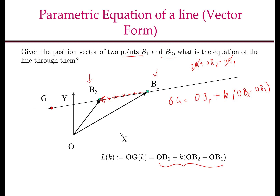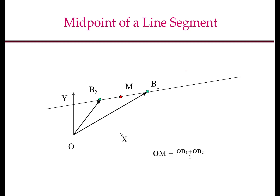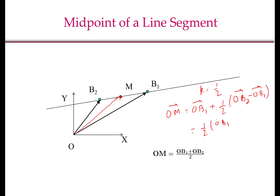To get the midpoint of B1B2, we choose k equal to one half. The position vector OM will be OB1 + half times (OB2 - OB1), which simplifies to (OB1 + OB2) / 2. So the midpoint M of the line segment B1B2 is given by (OB1 + OB2) / 2.